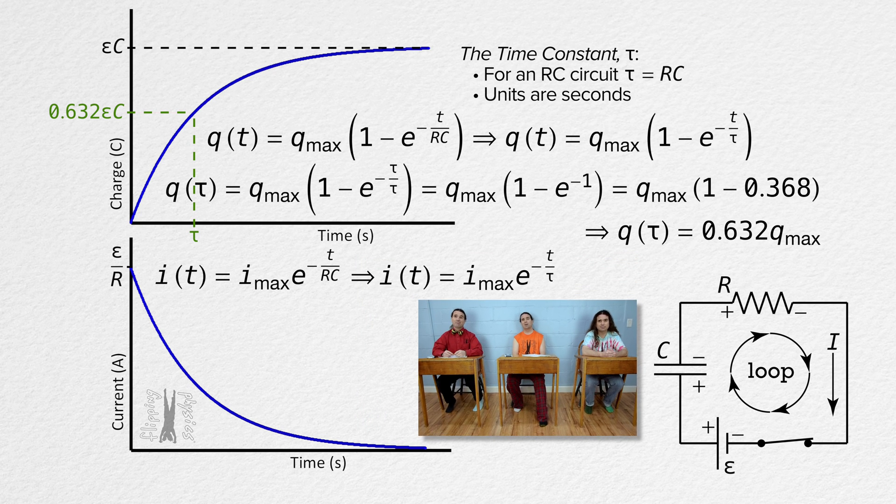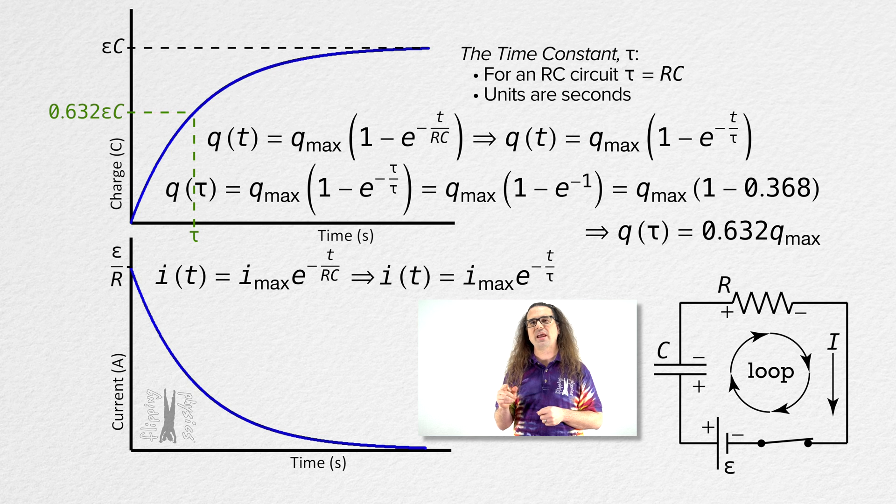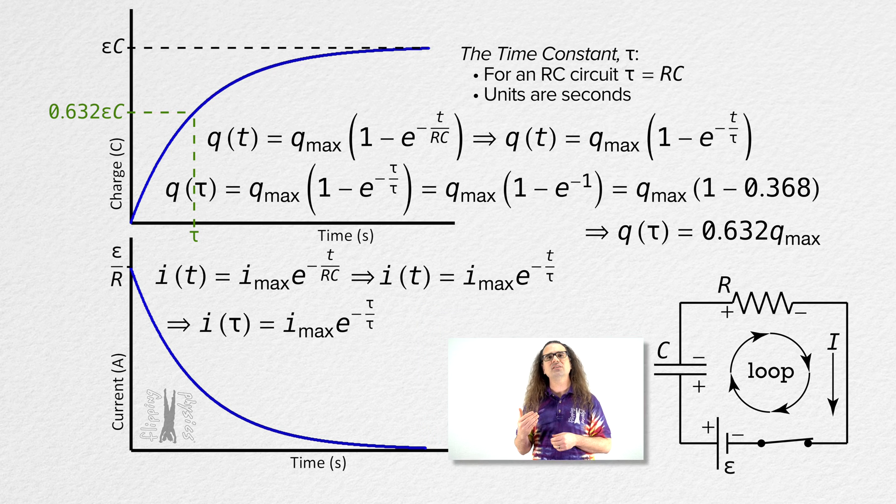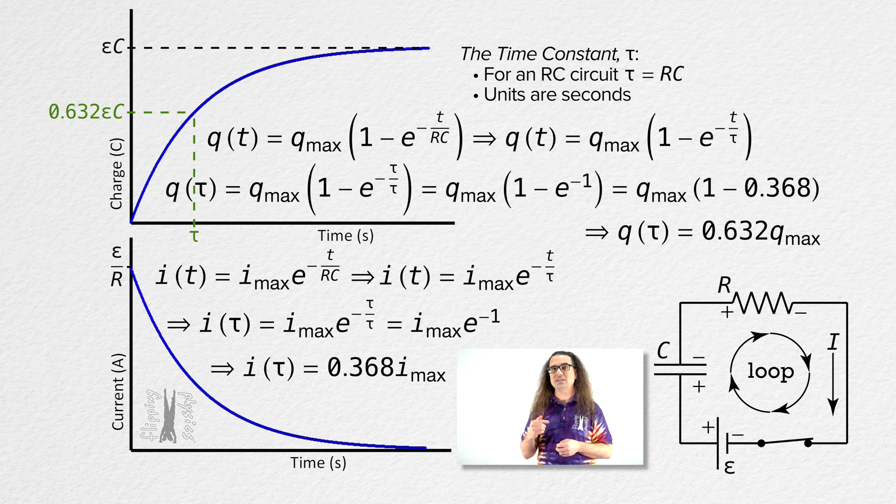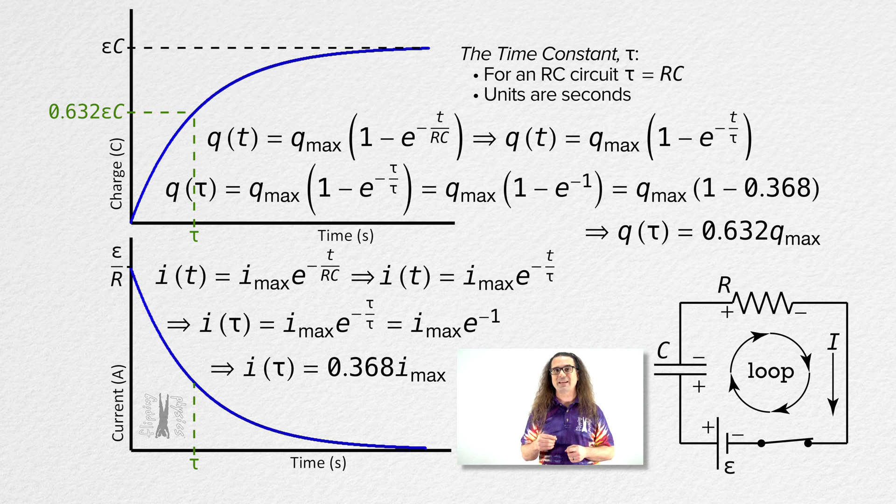Okay. And if we look at the current through the circuit after one time constant, you can see that we again get e to the power negative 1. And the current in the circuit after one time constant equals 0.368 times the maximum current in the circuit. In other words, after one time constant, the current through the circuit has decreased 63.2% from its maximum value.